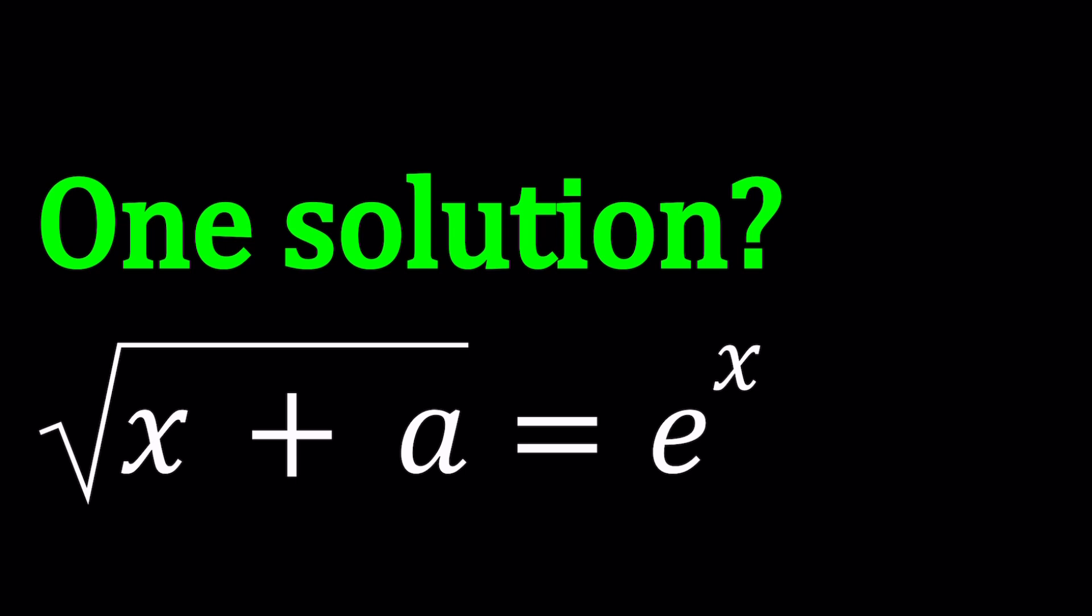How many a values are there? Is there an a value? Is that like infinitely many or a single one? What do you think? Make a guess and we're going to get started.